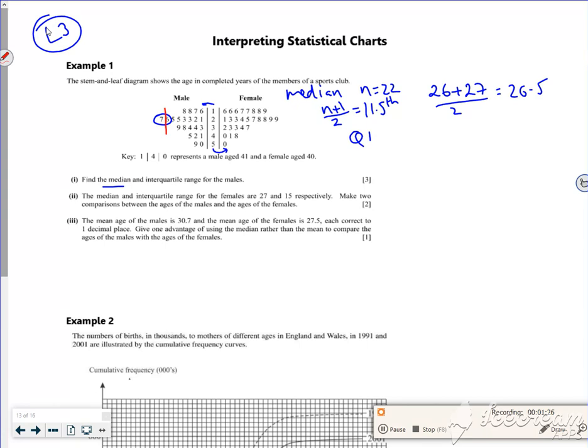So I've got 1, 2, 3, 4, 5, 6, 7, 8, 9, 10, 11 numbers there, 2, 4, 6, 8, 10, 11 numbers. So if n is 11 for my bottom half, n plus 1 over 2 gives me the 6th number along. So the 6th number along will be this one. So my lower quartile is 22.